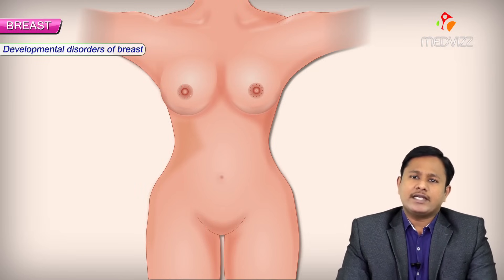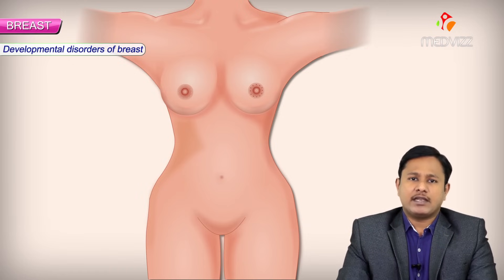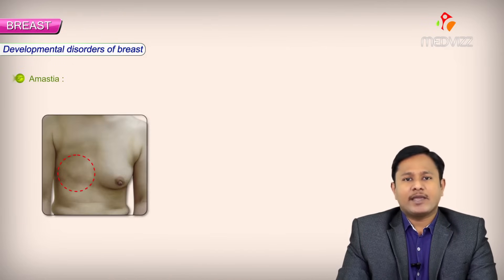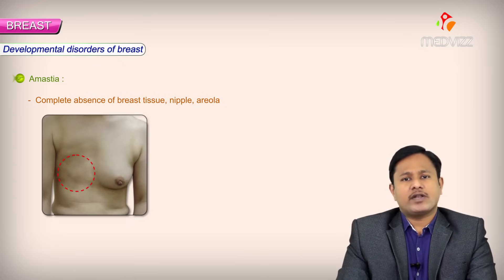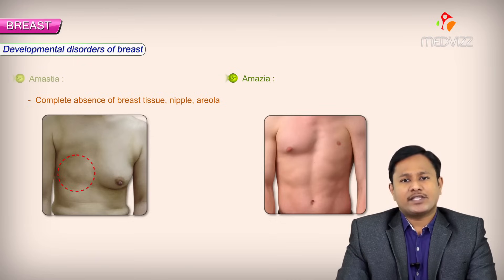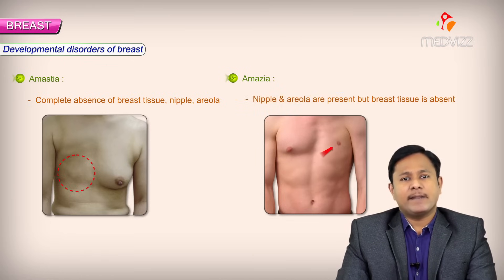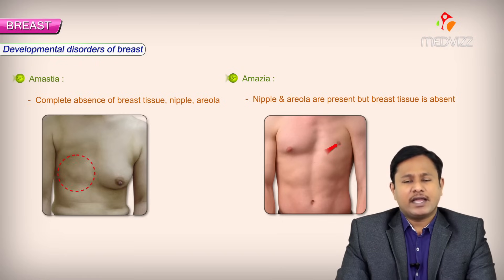Now let us see the abnormalities associated with the development of the breast. The common abnormalities are amastia and amazia. Amastia is the condition where all the structures of the breast — the breast tissue, the nipple and the areola — are all absent. Amazia is the condition where only the breast tissue is absent but the nipple and areola are present. You have to differentiate between amastia and amazia.